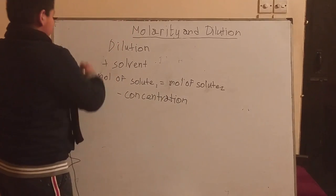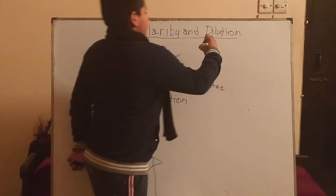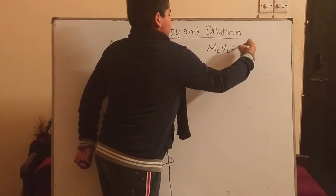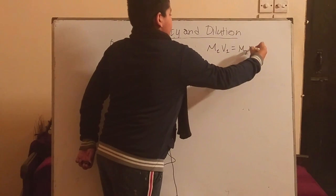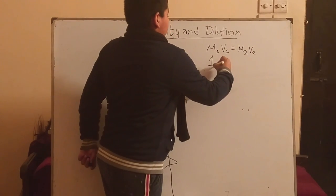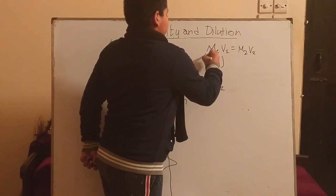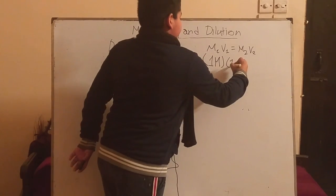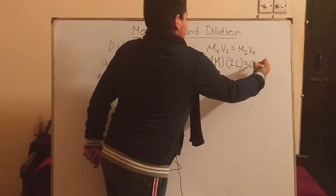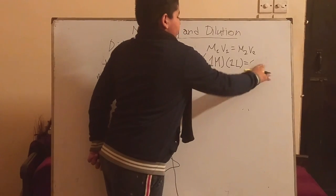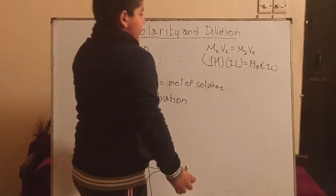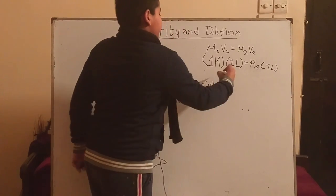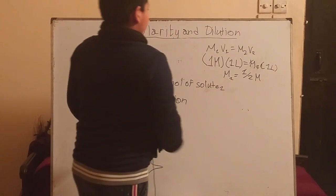Using this particular equation: M1V1 equals M2V2. We have one molarity with the volume of one liter. Now if the volume would be the same, we solve for the second molarity which will be one-half molarity.